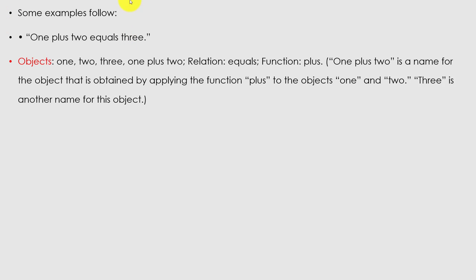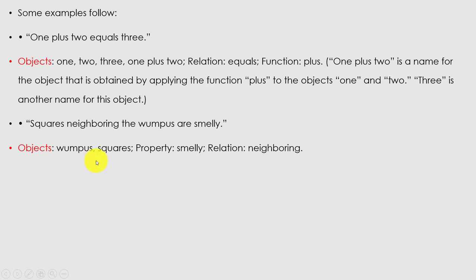'1 plus 2' is the name for the object obtained by applying the function plus to the objects 1 and 2, and 3 is another name for that same object. Another example: 'squares neighboring the wumpuses are smelly' — here the objects are wumpuses and squares, the property is smelly, and the relation is neighboring. We can find out relationships between language elements: there can be objects and relations.